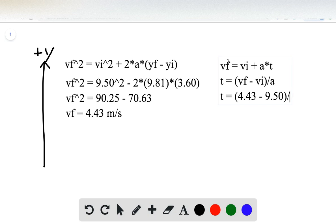4.43 minus 9.50 divided by negative 9.81. While I type this in, we get t is equal to 0.52 seconds.